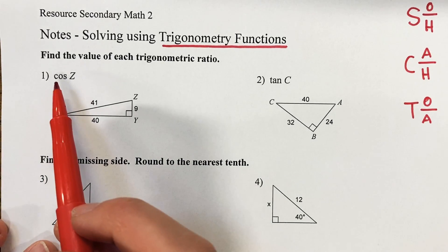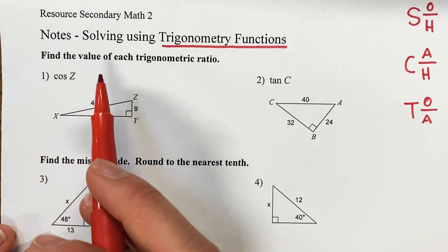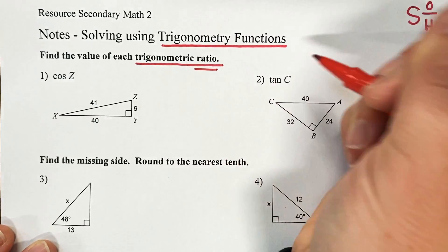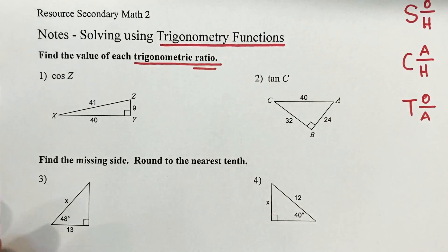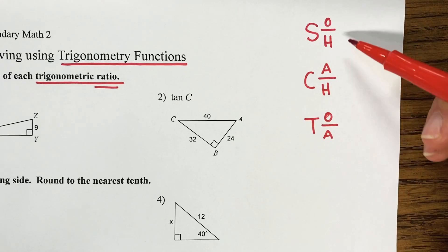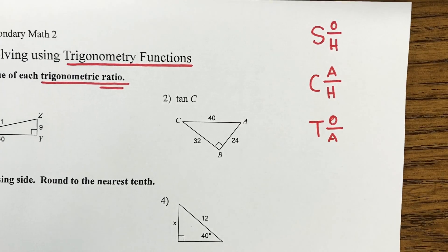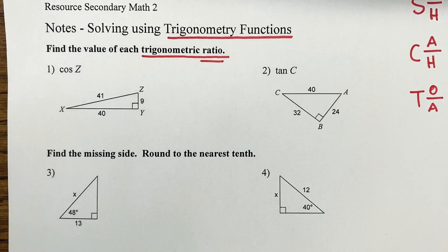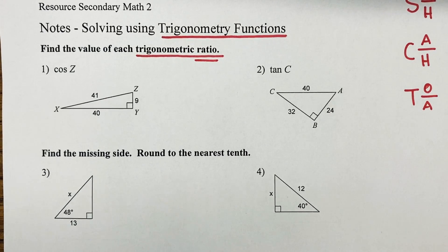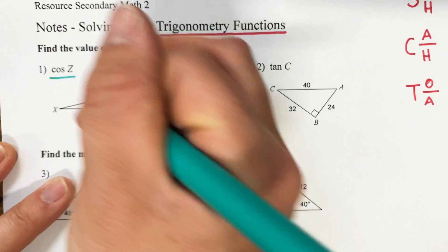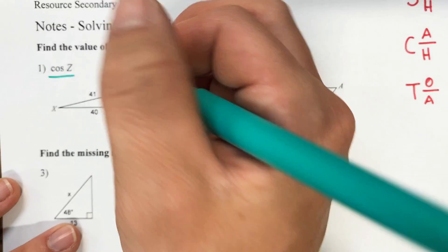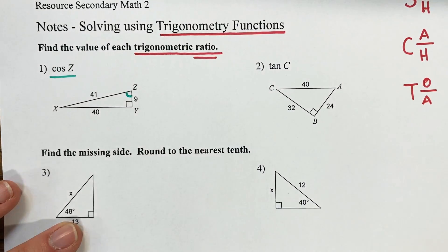For numbers 1 and 2, it's asking us to find the value of each trigonometric ratio. This is a lot like we were doing last time. Remember, ratio means fraction — something over something. So let's look at number 1. It's asking us to find the cosine of angle Z. Find angle Z in this triangle — angle Z is right there.